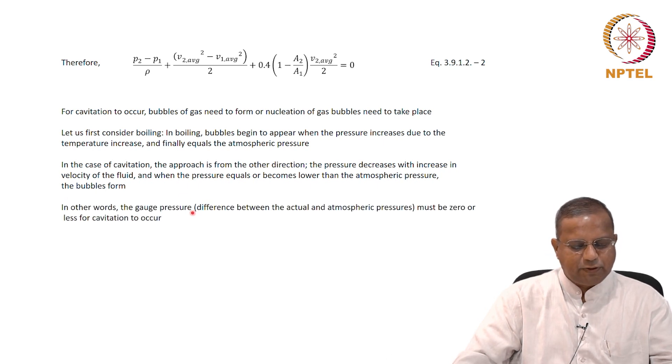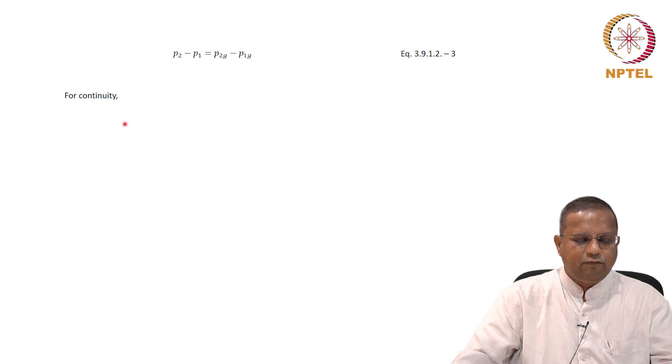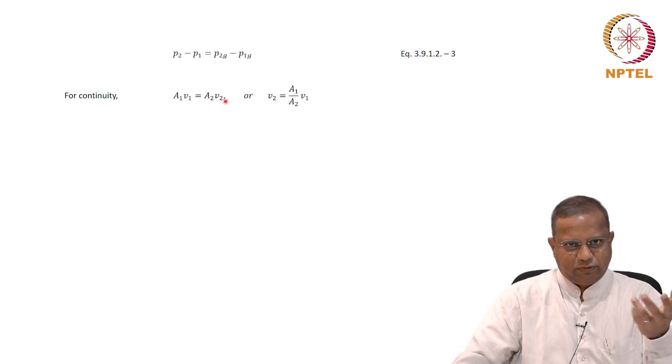Let us first consider boiling. In boiling, bubbles begin to appear when the pressure increases due to temperature increase and finally equals the atmospheric pressure. In the case of cavitation, the approach is from the other direction, the pressure decreases with increase in the velocity of the fluid. And when the pressure equals or becomes lower than the atmospheric pressure, the bubbles begin to form. In other words, the gauge pressure or the difference between the actual and atmospheric pressures must be 0 for the cavitation to occur. So we have a criterion in this situation for cavitation to occur. So p2 minus p1 equals the gauge pressure p2g minus the gauge pressure p1g. The gauge pressure is nothing but the actual pressure plus the atmospheric pressure, 3.9.1.2-3.